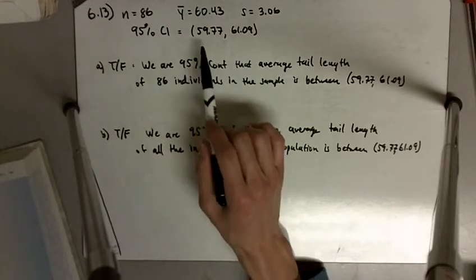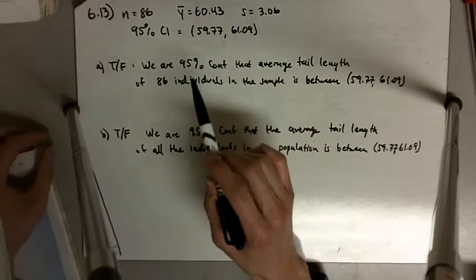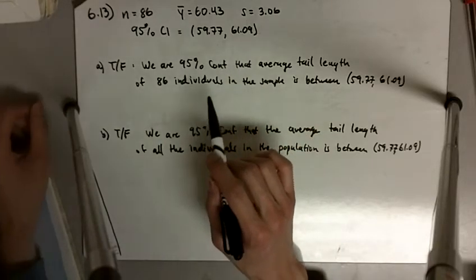It says a 95% confidence interval is 59.77 to 61.09, and it asks true or false: we are 95% confident that the average tail length of 86 individuals in the sample is between 59.77 and 61.09.